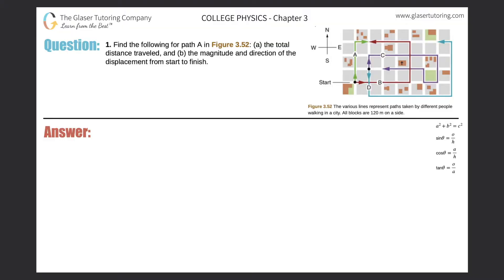Number one, find the following for path A in figure 3.52: the total distance traveled. Alright, so let's take a look at part A first. We need to look at the total distance traveled. Now remember what distance means. I'm going to represent it as D. Distance represents the total ground covered by an object that's moving.